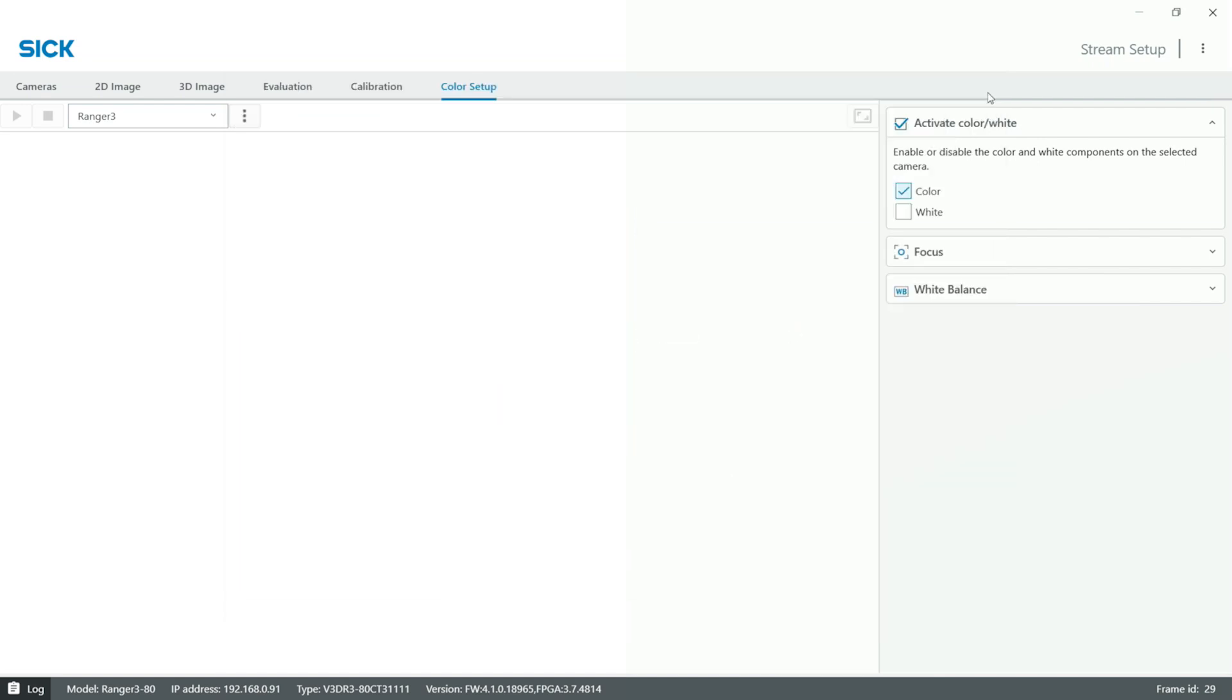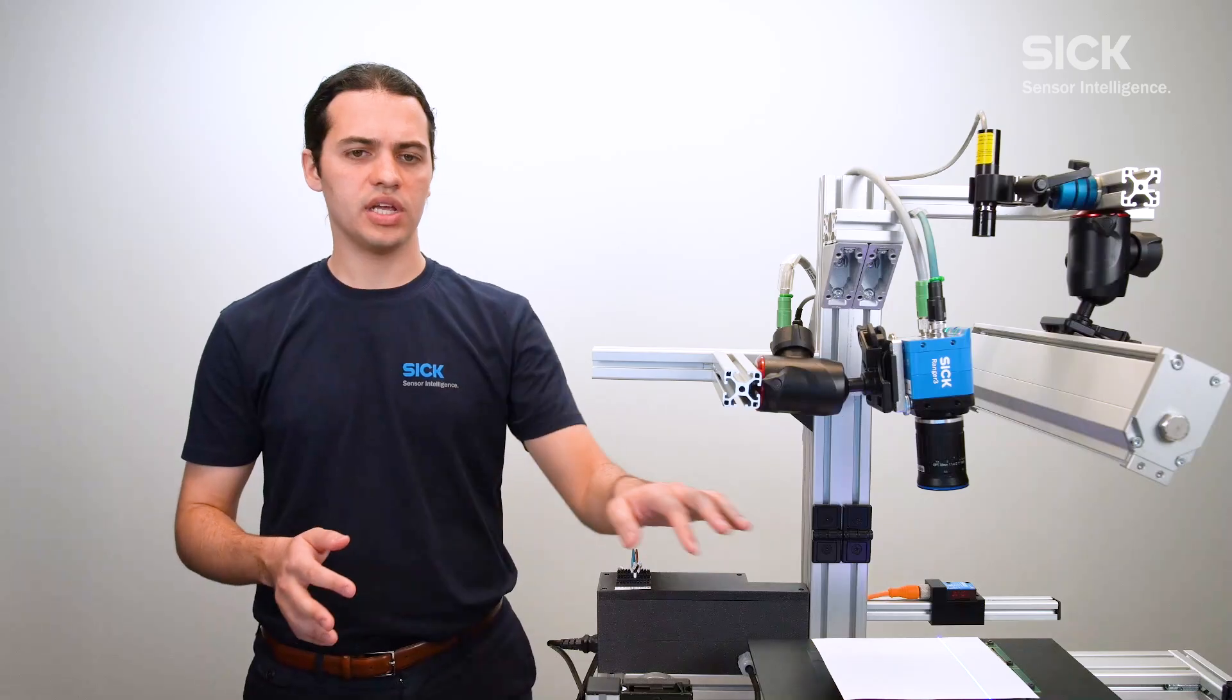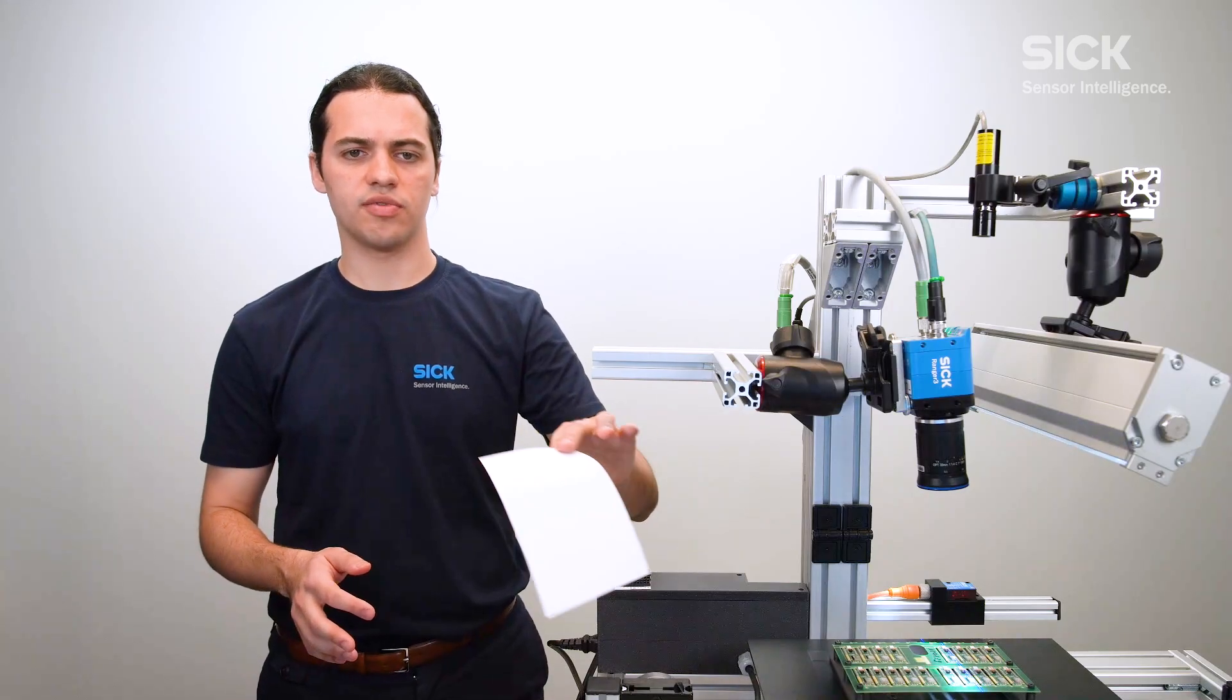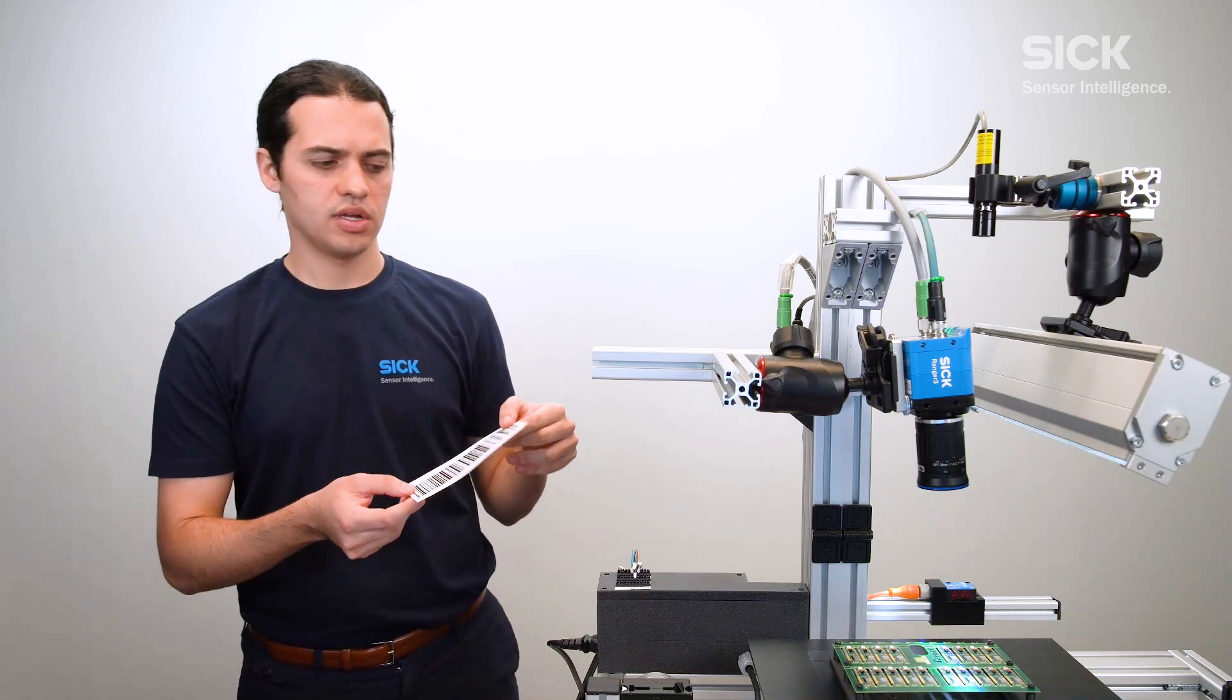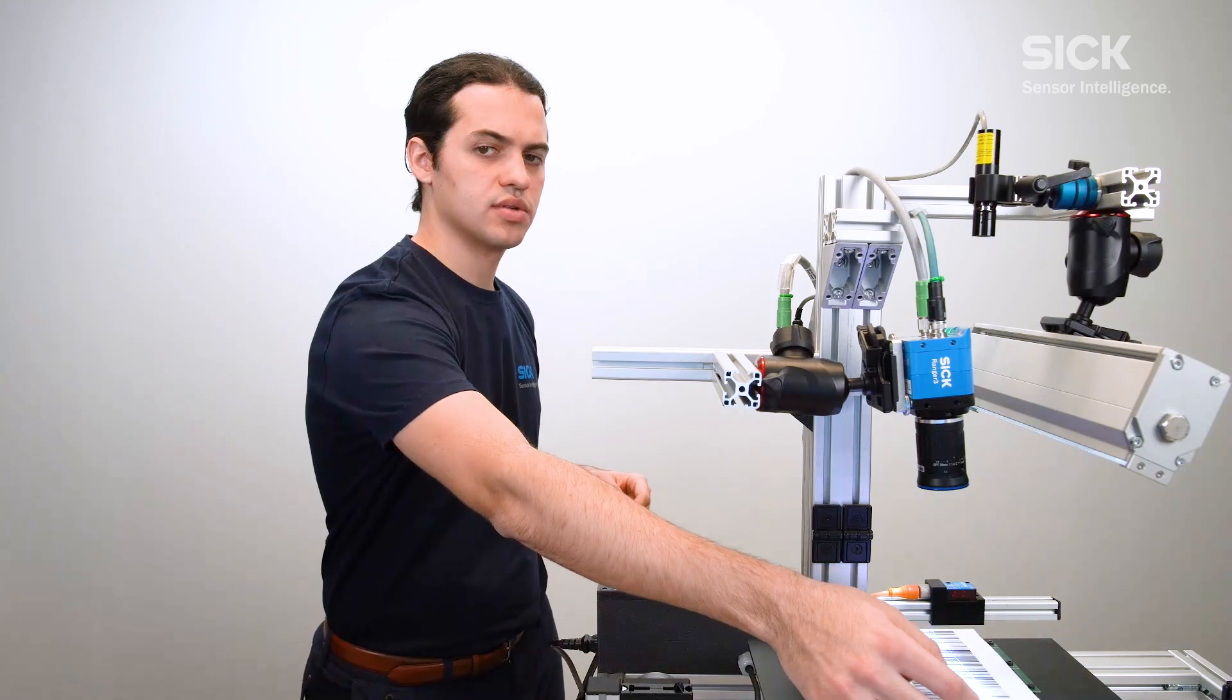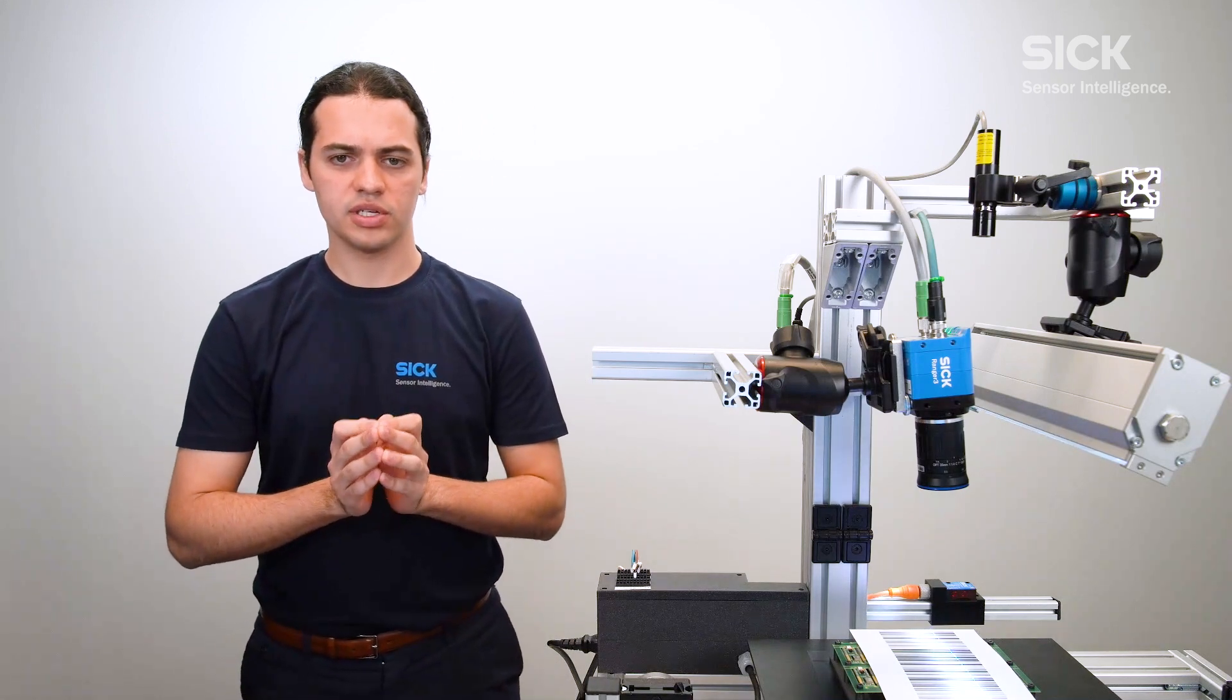Now open the focus section and press play. This starts the camera in free running mode to make it easier to focus and find the correct position for the light. We can place a black and white target like a barcode, so that it is visible in all windows. This will help us focus the camera and find the correct position for the light.